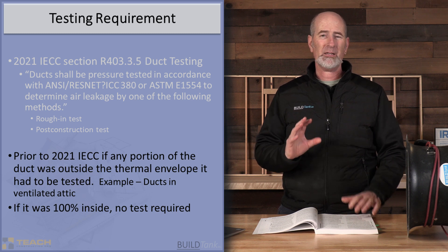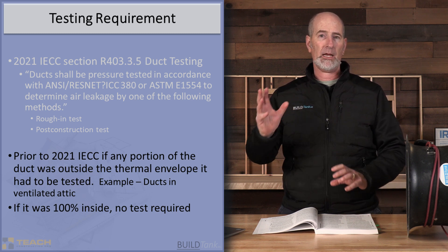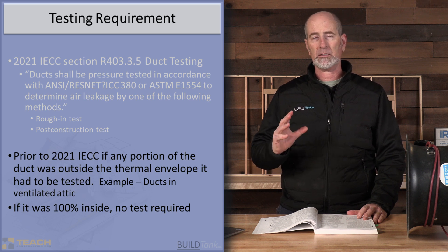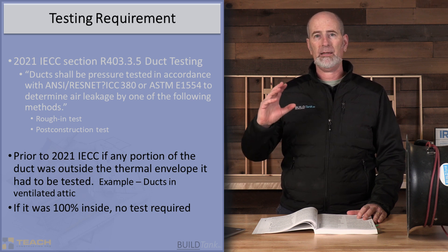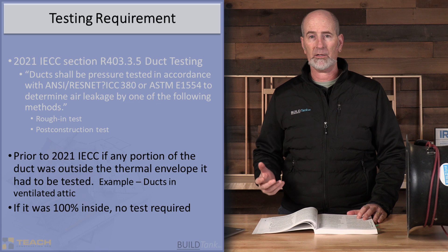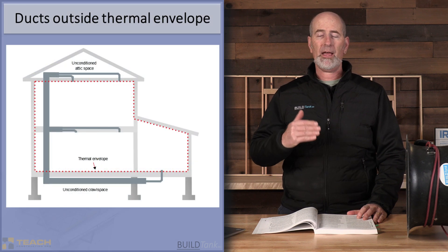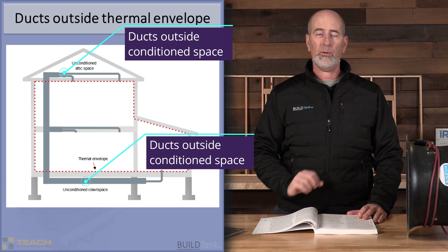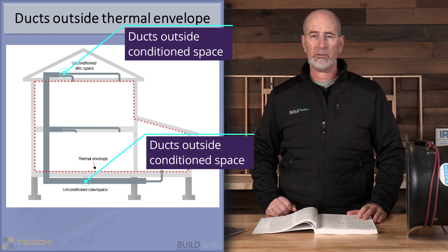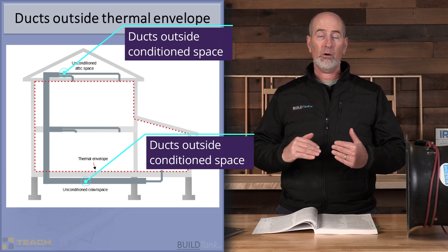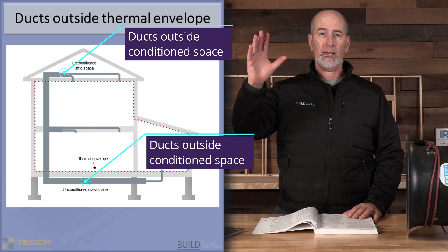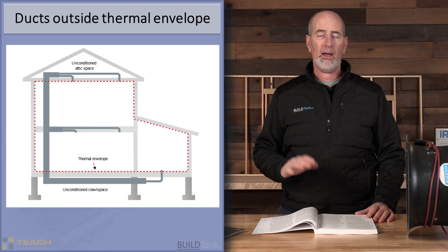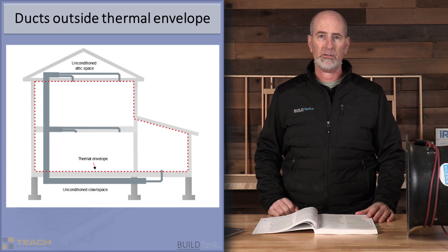A simple way of thinking about ducts outside the building thermal envelope would be thinking about a piece of duct system that is in a ventilated attic, for example. If any portion of that duct was in a ventilated attic in the past, that's when you had to do your total duct leakage test. Now, regardless of whether there are ducts in a ventilated attic or ducts inside the conditioned space of the house, you have to test for total duct leakage.